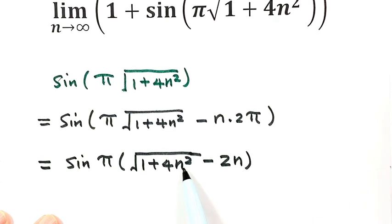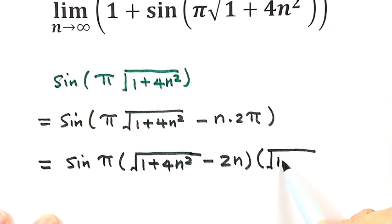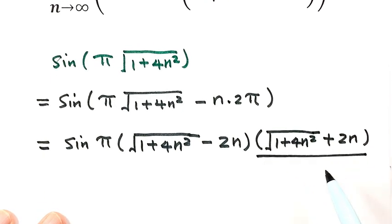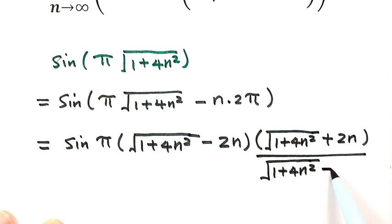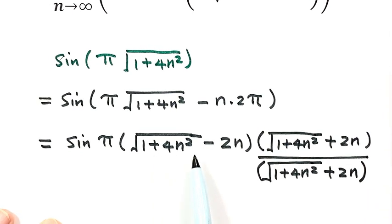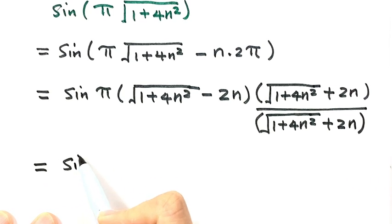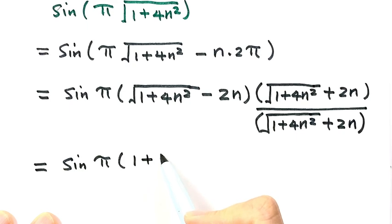Because we want to get rid of the square root, we multiply by its conjugate: (√(1 + 4n²) + 2n) on top and bottom. Now it's like (a - b)(a + b) = a² - b². So the numerator simplifies: the first term squared gives 1 + 4n².